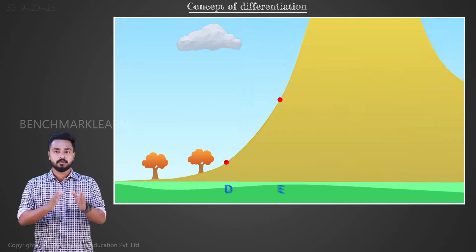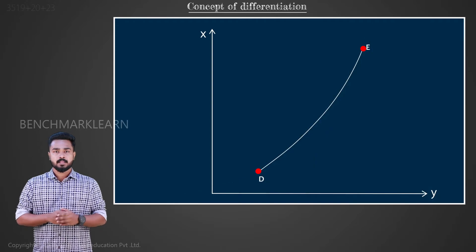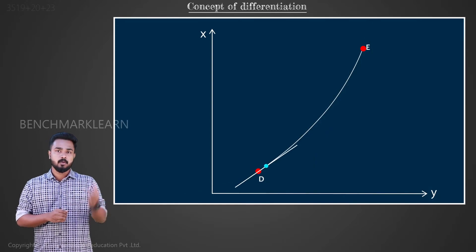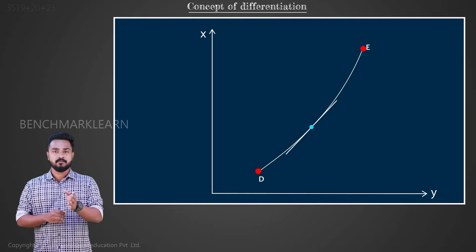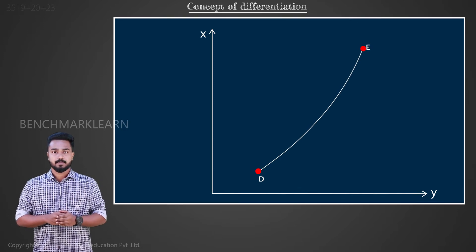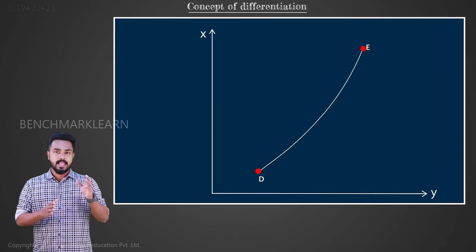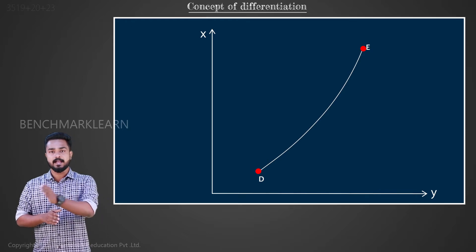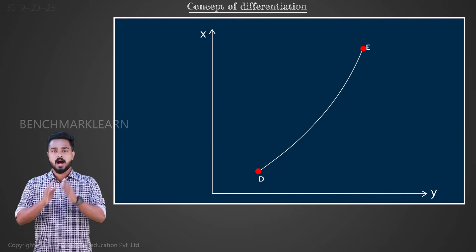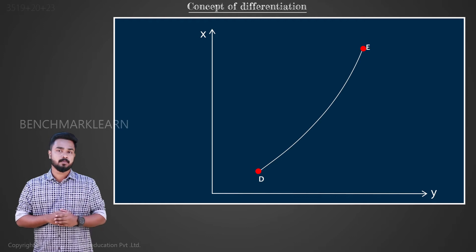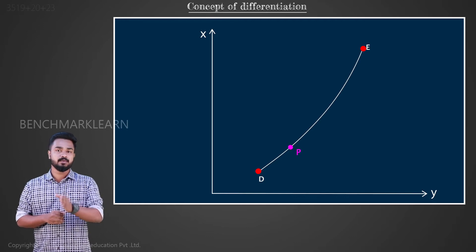Let's consider the portion DE. Here, the slope of the hill is not the same from D to E as we assumed earlier. It changes at every point between D and E. How will we find the actual slope at a point P in between D and E?